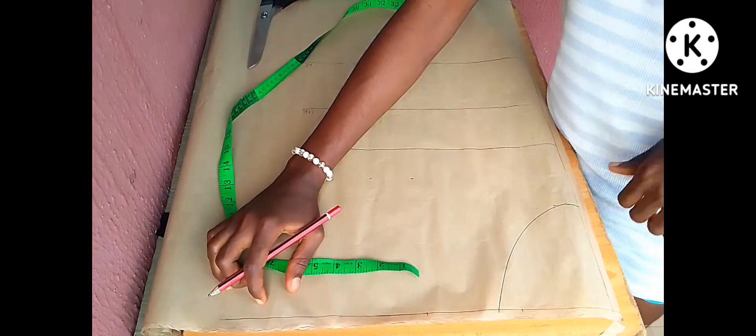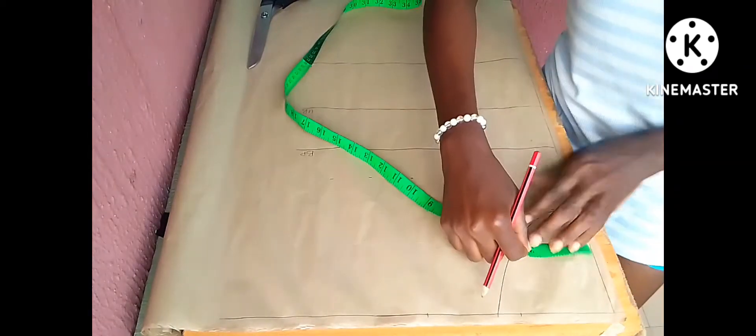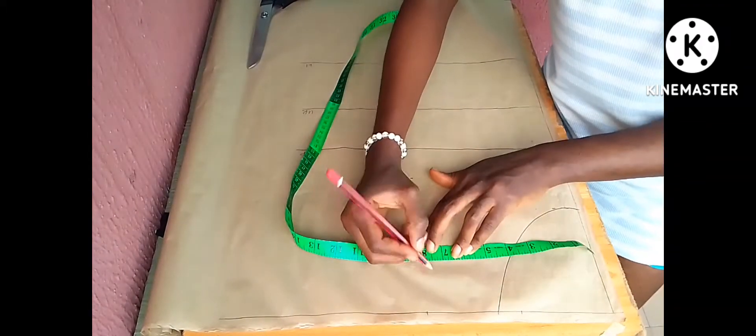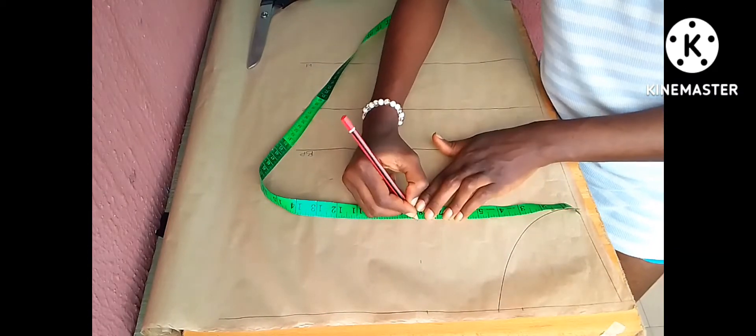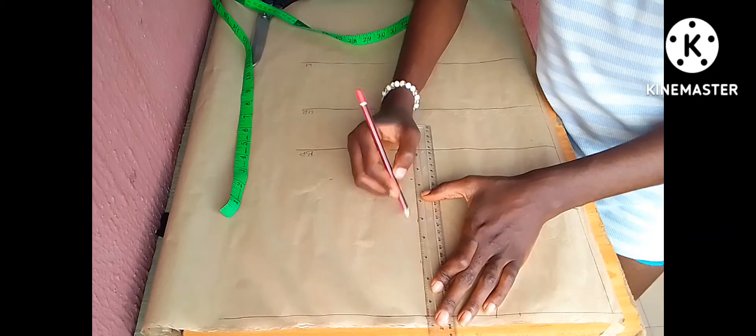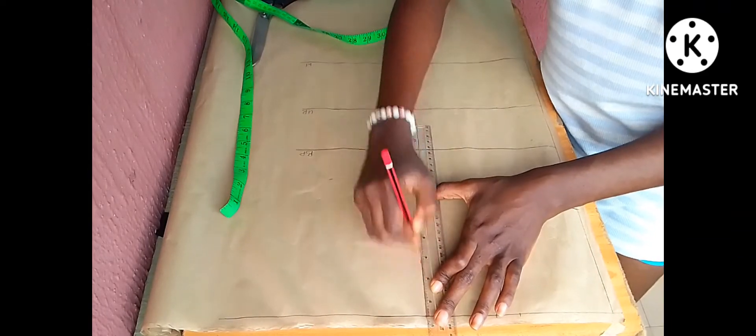Now to get my armhole core, I will divide my bust circumference which is 34 divided by 6 plus 1.5 inch. So it gives me approximately 7.5. So that's what I'm using for my armhole core. Now I drew a straight line and I cross these two.